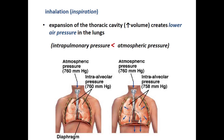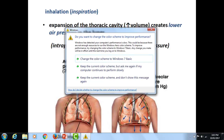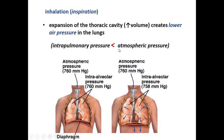Inhalation, or inspiration, involves expansion of the thoracic cavity so that the volume of the chest cavity increases, which effectively lowers the pressure of the air inside the lungs. You have the same number of air molecules in a larger space. Intrapulmonary pressure is lower than atmospheric pressure, and that results in air moving from outside to the inside of the lungs — from high to low pressure.